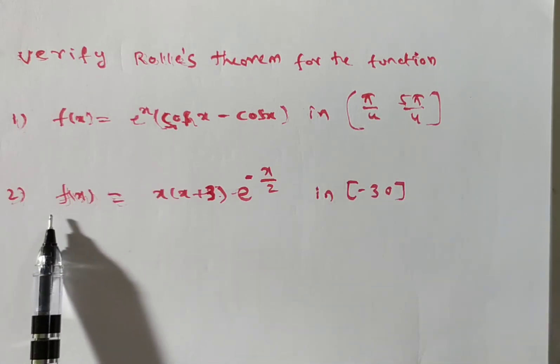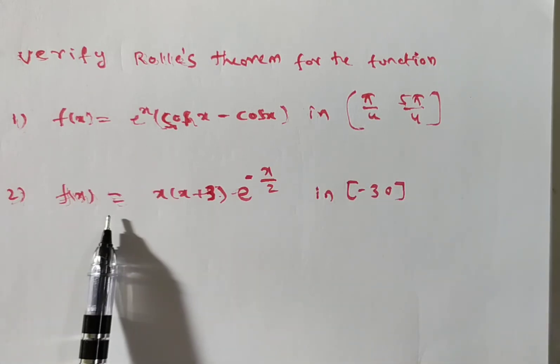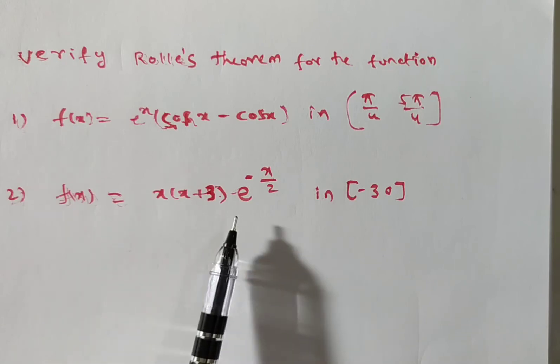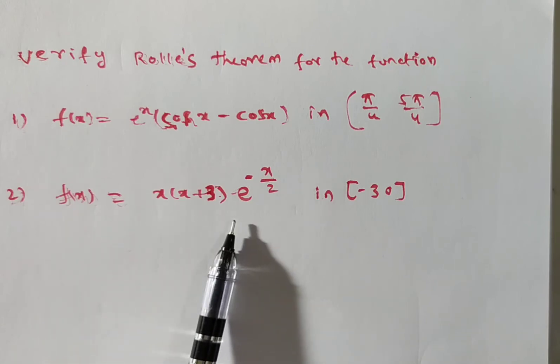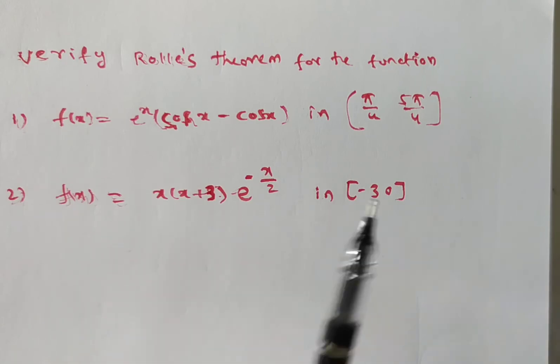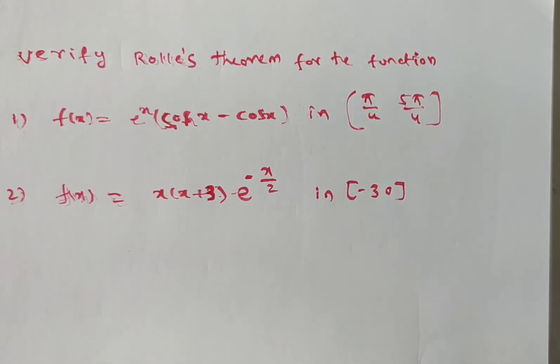The second problem is f(x) = x · (x + 3) · e^(−x/2) on the closed interval [−3, 0].